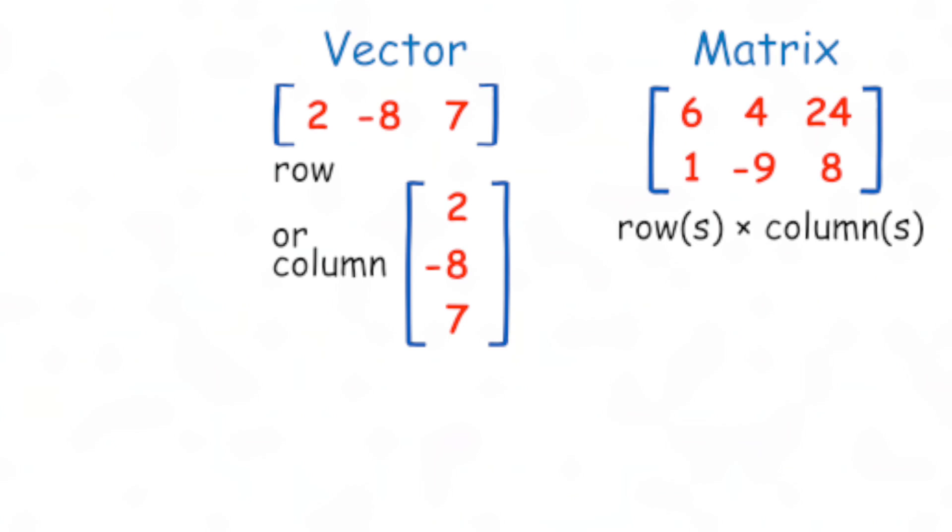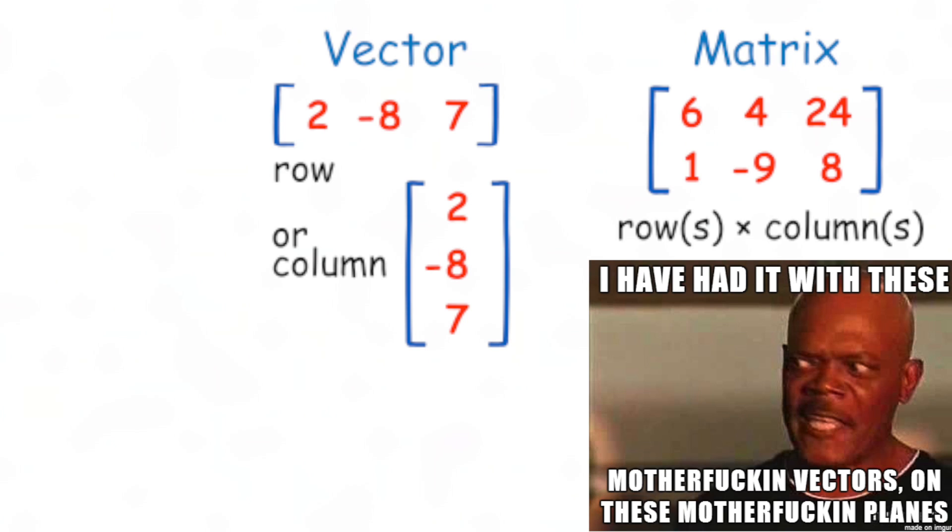More general than a vector is a matrix. A matrix is a rectangular array of numbers and a vector is a row or column of a matrix. So each row in a matrix could represent a different data point, with each column being its respective features. Less general than a vector is a scalar, which is just a single number.